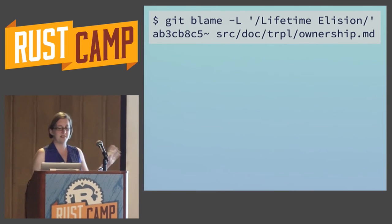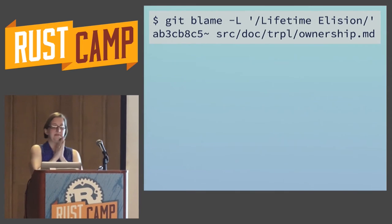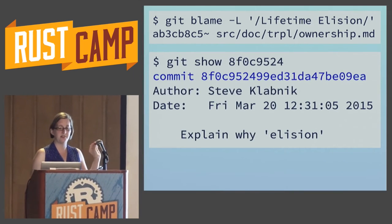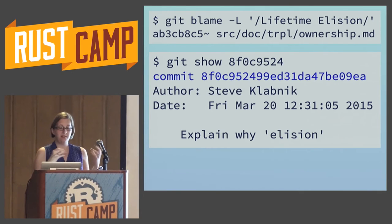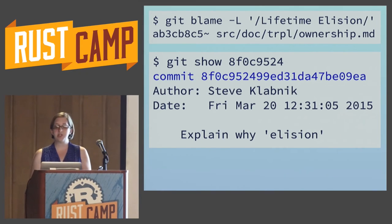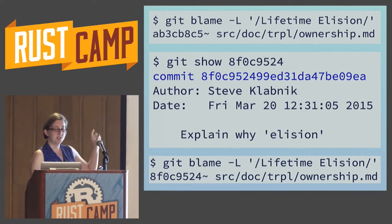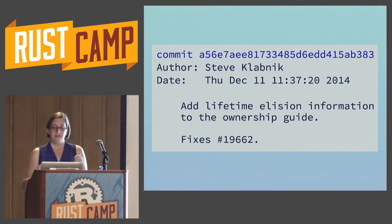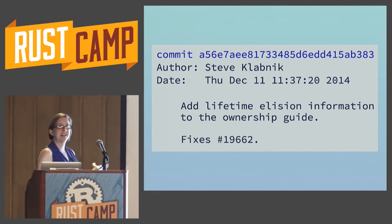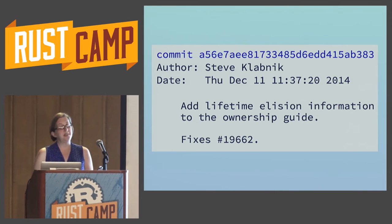We give it the regex of the lifetime elision section header and we can see that the commit that changed it was one where Steve just added a section mentioning elision for ergonomic reasons — not very interesting. If we move beyond that commit, we find a commit that says 'add the lifetime elision information.' Now we see that the rules haven't changed since they were added — this is where they got added to the documentation, about six months ago. So they haven't existed since the beginning of Rust; they're pretty recent.